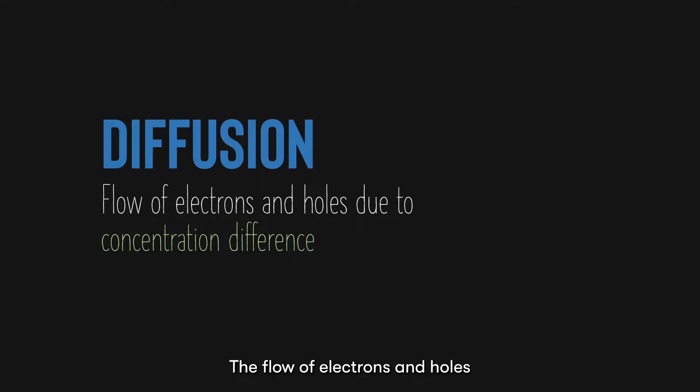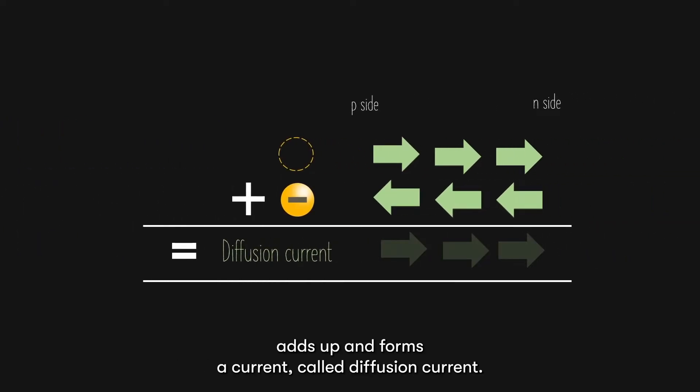The flow of electrons and holes adds up and forms a current called diffusion current. Remember, the direction of diffusion current, like all traditional current, should be the opposite of the electron direction, which is from the p-side to the n-side.